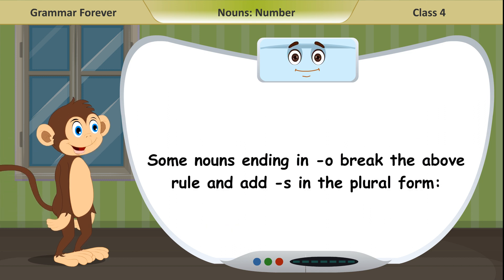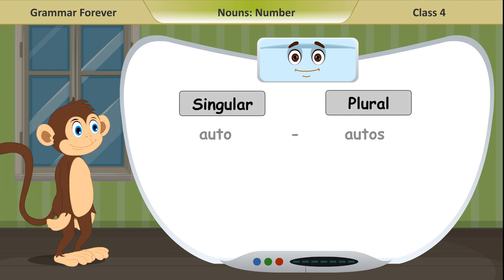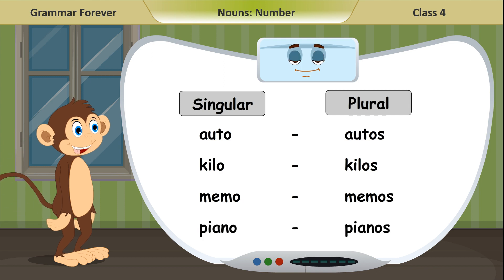Some nouns ending in O break the above rule and add ES in the plural form. Singular, plural: Auto, autos. Kilo, kilos. Memo, memos. Piano, pianos.